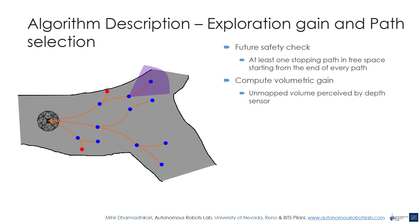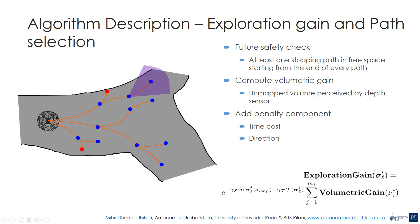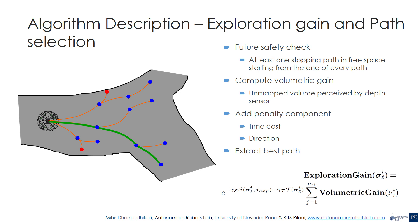Next, we compute the volumetric gain for each vertex in the tree. This gain is defined as the total unknown volume which would be perceived by the depth sensor onboard the robot if the robot were located at that vertex. To improve the behavior of the planner, we add two more decay functions along with the volumetric gain. The first is the time cost to traverse the whole path. The second relates to the deviation of the path from the current exploration direction. Using these decay functions, the final volumetric gain is calculated using the formula shown. Finally, the path having the highest volumetric gain is selected and followed by the robot. This procedure is repeated for continuous exploration of the environment.